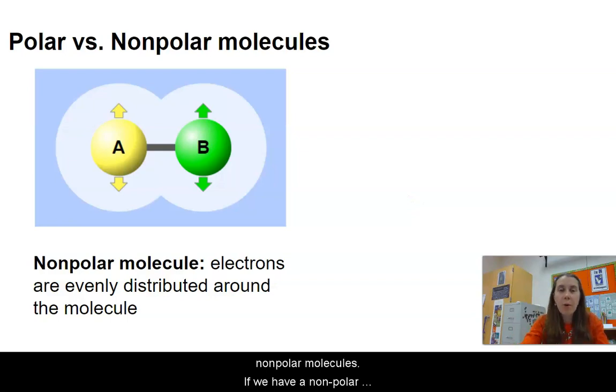Now let's talk about polar versus nonpolar molecules. If we have a nonpolar molecule, our electrons are going to be evenly distributed around the molecule. If we look at this image here that was from the polarity simulation, you can see that I've shown the electrostatic potential, but it's all white. There's no difference in charge on one side versus the other side because atoms A and B have exactly the same electronegativity.